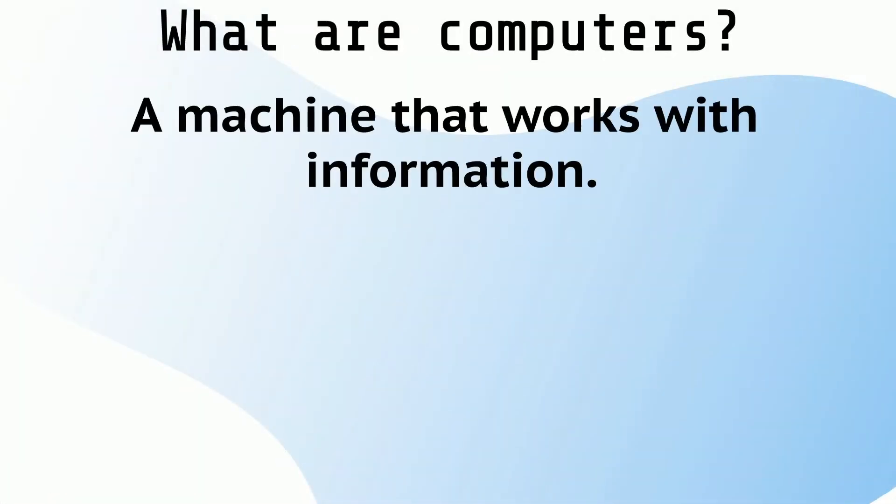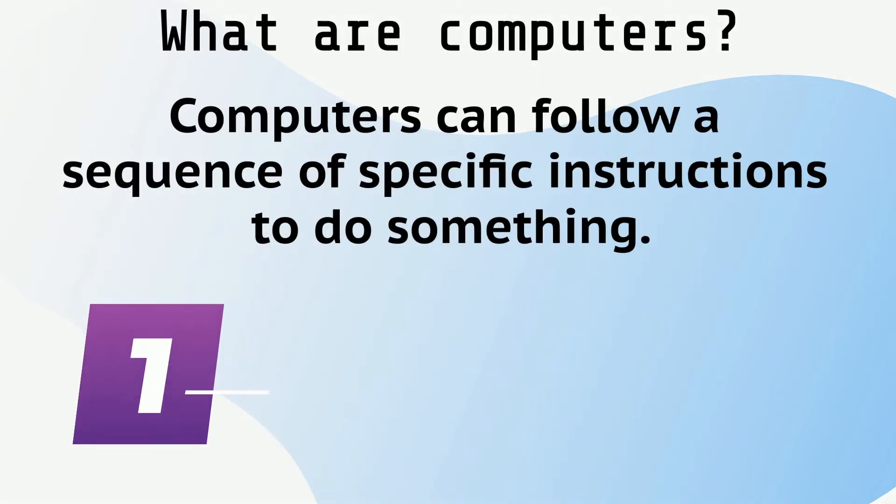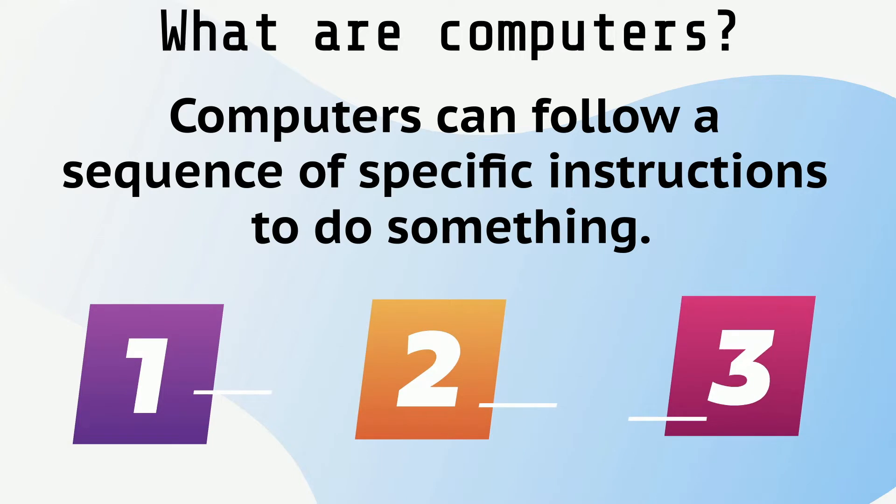A computer is a machine that works with information. This information can be words, numbers, pictures, sounds, or movies. Computers can follow a sequence of specific instructions to do something.